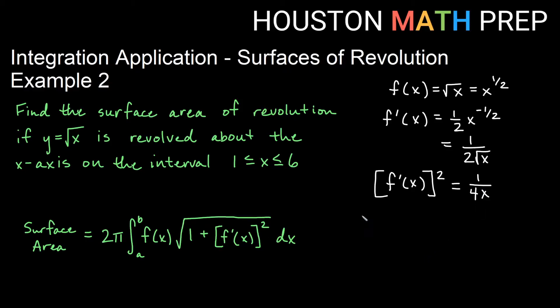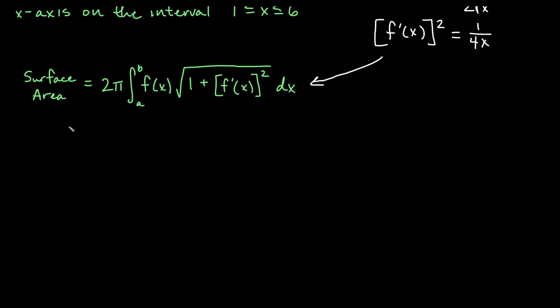So we'll go ahead and put that into our formula. The surface area equals 2π times the integral from 1 to 6 of square root x times the square root of one plus f prime squared, which is one plus one over four x, dx.